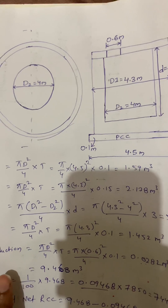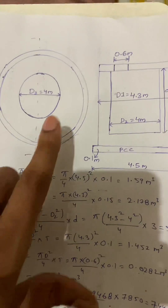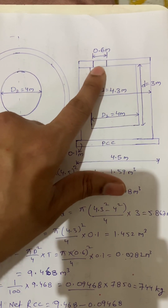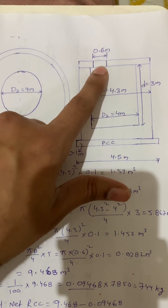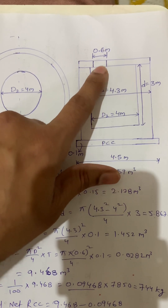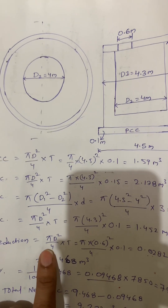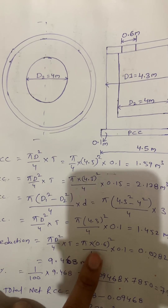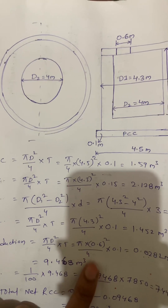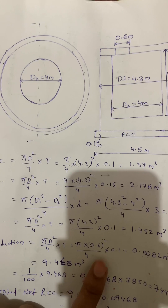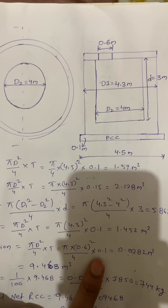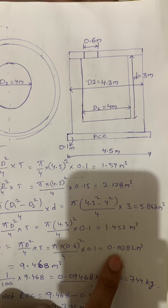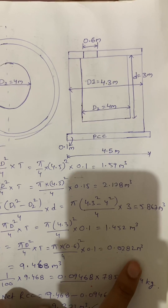Next is hole deduction. The inlet portion is 0.6 meters — this is the hole we have to deduct. Using the same formula: π D² / 4 × T = π × (0.6)² / 4 × 0.1 meters thickness. The quantity is 0.0282 meter cube.